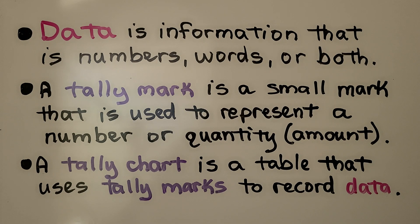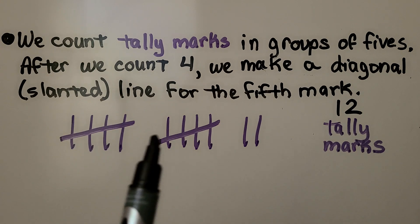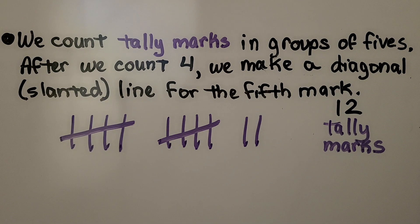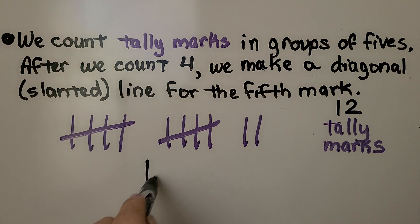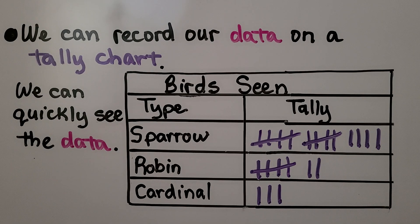We count tally marks in groups of fives. After we count four, we make a diagonal — that's a slanted line — for the fifth mark. So here we have 5, 10, 11, 12 tally marks as we count them. We write tally marks 1, 2, 3, 4, 5, and then we can skip count by fives and add the ones left over. We can record our data on a tally chart.